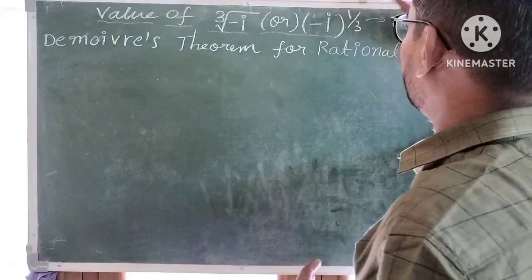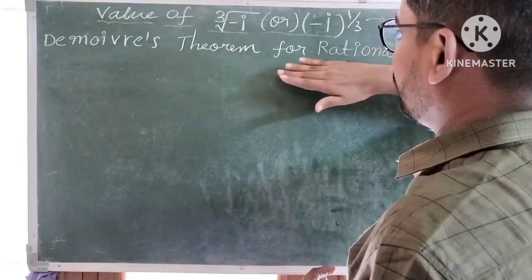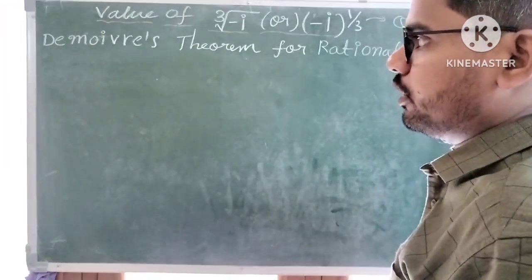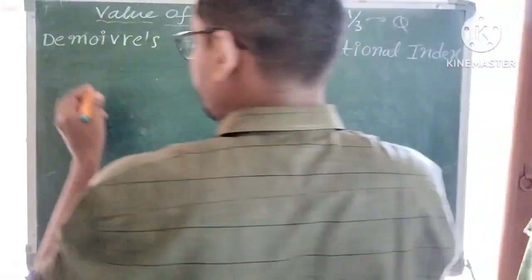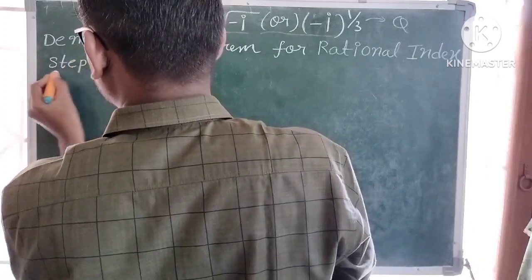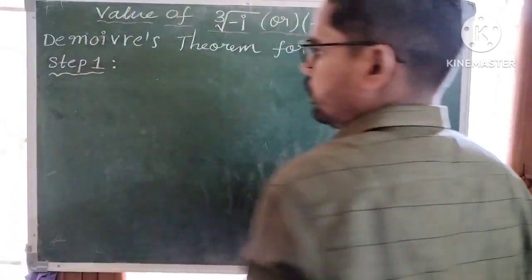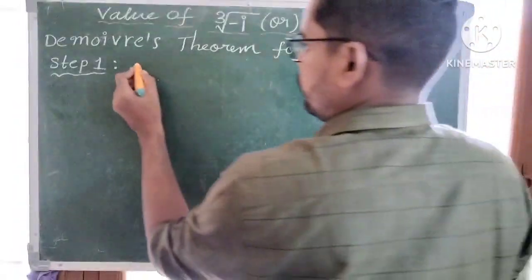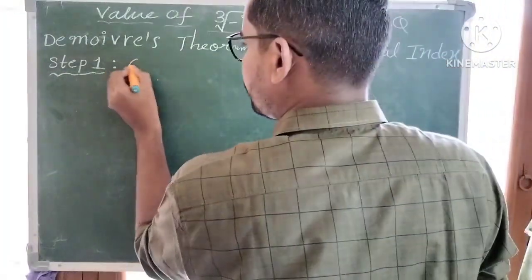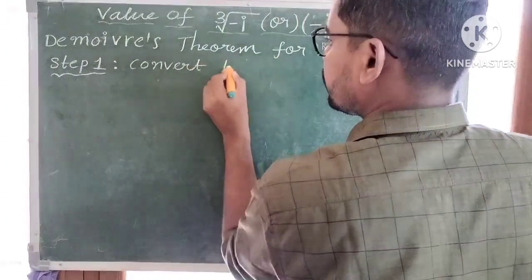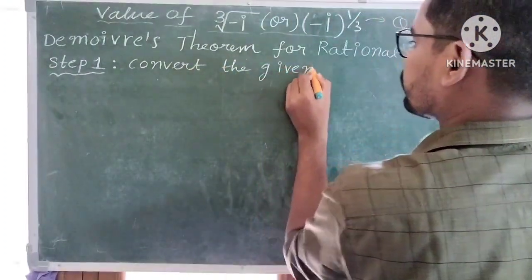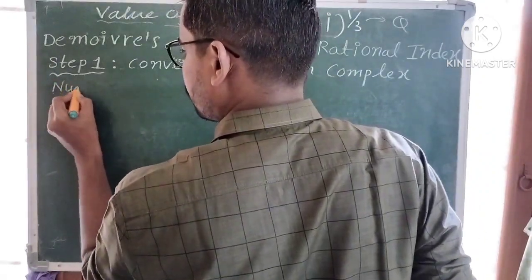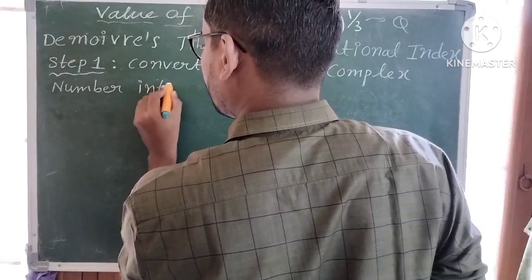Since the power of this complex number is a rational number in p by q form, I am going to use De Moivre's theorem for rational index. Let us solve this problem step by step. Step 1: we have to convert the given complex number into polar form.